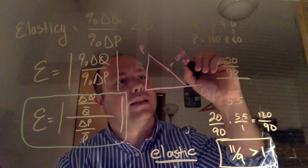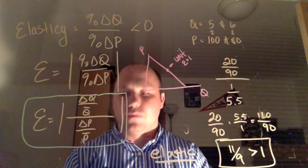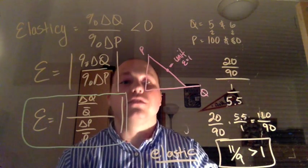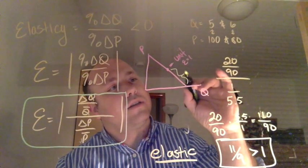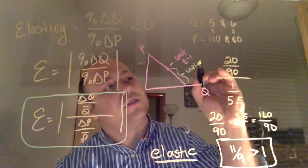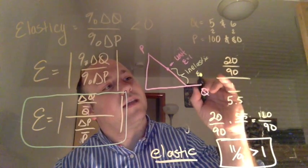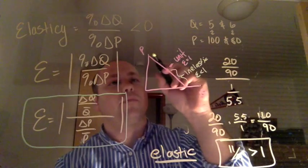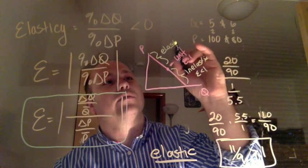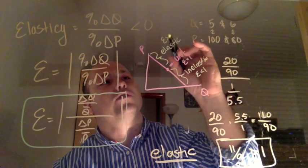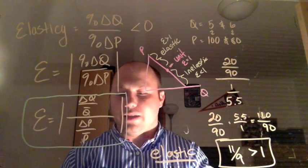So I'm going to write elasticity equal to 1, okay? That's unit elastic. This lower portion is the inelastic region, elasticity less than 1, and the upper portion is the elastic region. Elasticity greater than 1. We said we're in the elastic region.